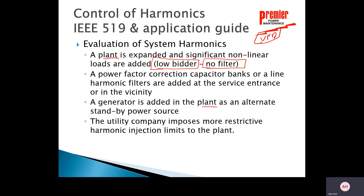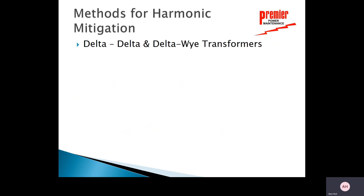If a generator is added to a plant as an alternate standby source, it can heat up much faster due to harmonics. The utility's equipment is robust enough to handle it, but the utility may start imposing harmonic injection limits. At a Nucor facility in Alabama, the utility was concerned that improper filtering on a backup yard would cause problems on their 500 kV grid, so remediation was required.